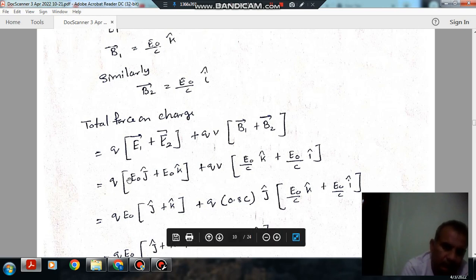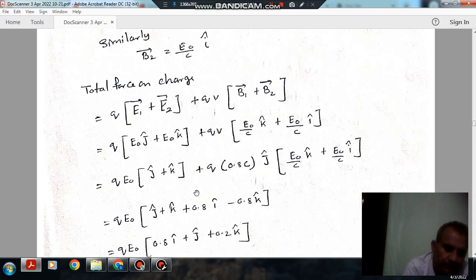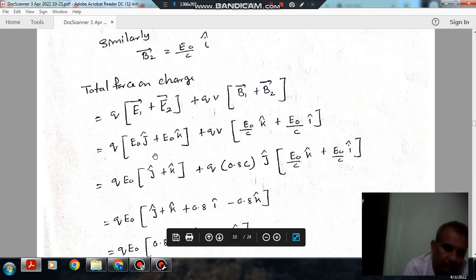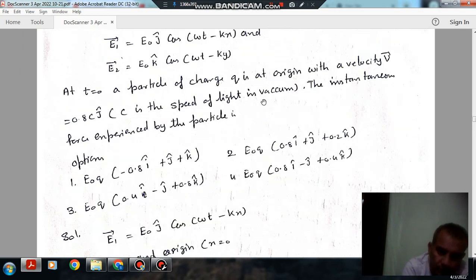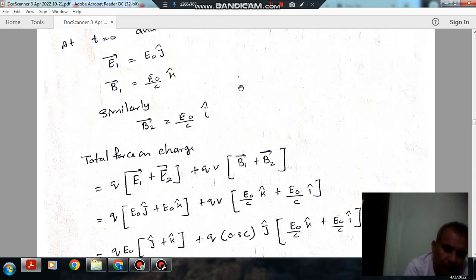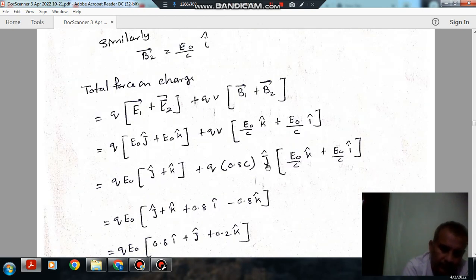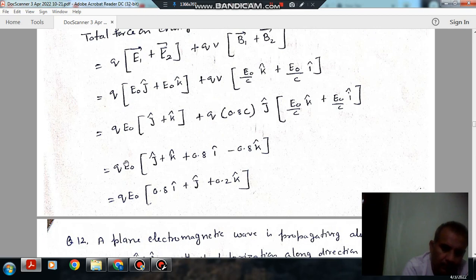The force is q times electric field and q times velocity cross magnetic field. The electric force is q E0 j plus E0 k. The velocity of the charge is 0.8c in j direction. So this gives us q E0 c times k cross 0.8j, and E0 c i cross 0.8j.